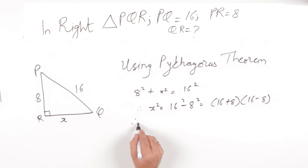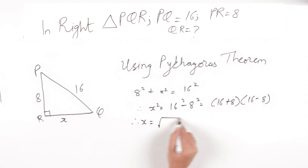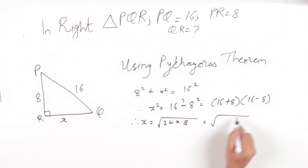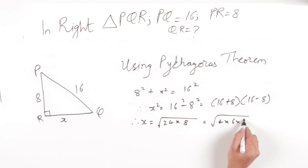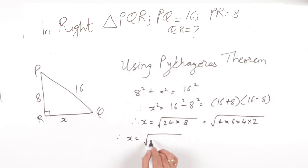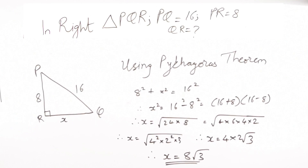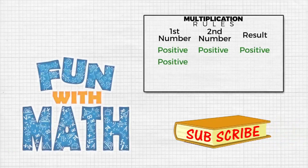Therefore x will be the square root of 24 into 8, which is nothing but the square root of 4 squared into 2 squared into 3. When we simplify that we get x is equal to 4 into 2 root 3, that is 8 root 3.